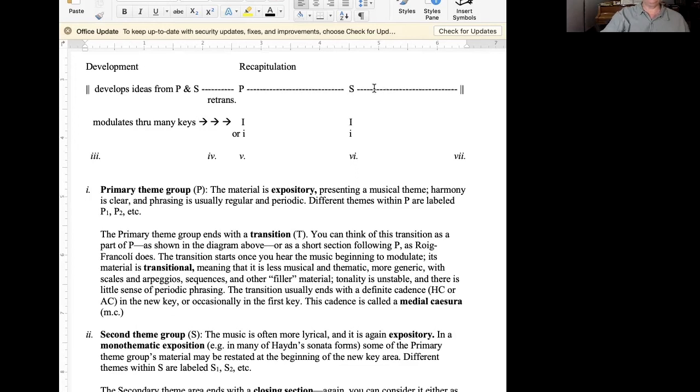The secondary theme group or second theme group will be in the tonic, and if we're in a minor key, it might be in the minor tonic, or in some cases, it could be in the major tonic. Sometimes the music that was presented in the relative major key doesn't sound good in minor, so it might be brought back in a major tonic key. We have the second theme group. It leads to the closing section, and then the closing section transposed to the primary key leads us to the end of the recapitulation.